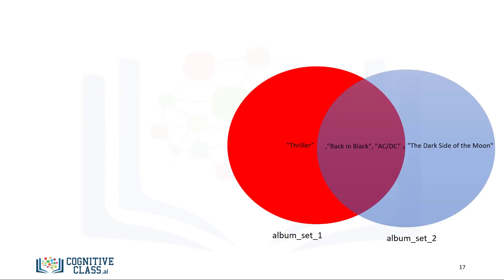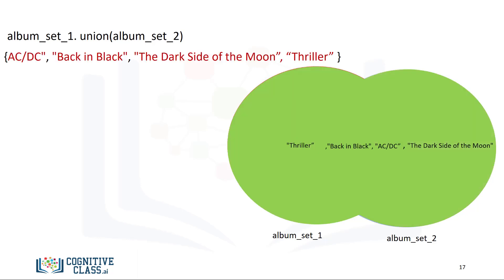The union of two sets is the new set of elements which contain all the items in both sets. We can find the union of the sets album set 1 and album set 2 as follows. The result is a new set that has all the elements of album set 1 and album set 2. This new set is represented in green.